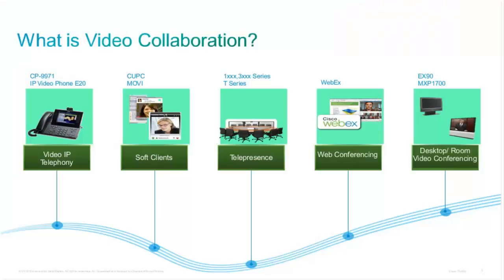What I really wanted to set the bar on first is what do we actually mean by video in the case of MediaNet. Video actually means a number of different types of things. It could be video coming from a hard IP telephone, it could be coming from a soft client, and it doesn't even have to be a Cisco soft client. We'll talk a little bit about whether MediaNet is for Cisco equipment or non-Cisco equipment — and the answer is it's for both.